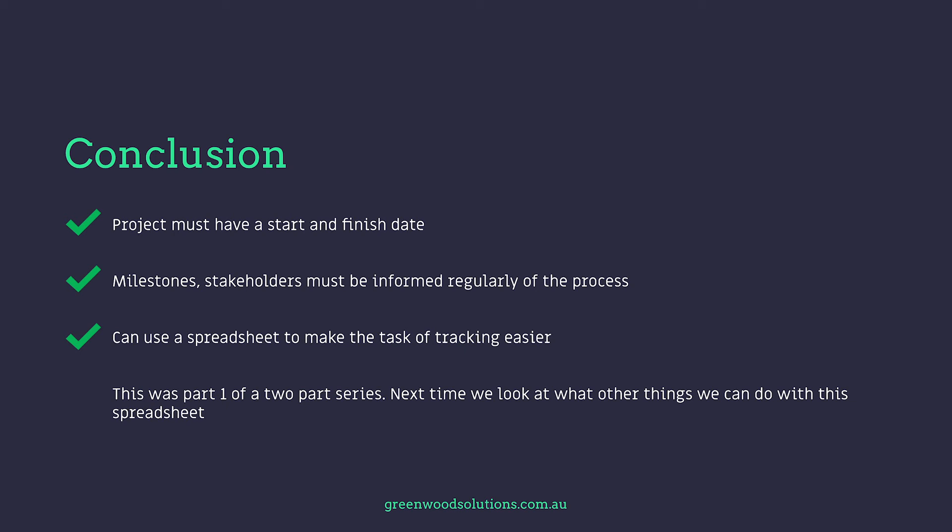Project must have a start and finish date. Stakeholders must be informed regularly of the process. You can use a spreadsheet to make the task of tracking easier. This was part one of a two-part series — next time we'll look at what other things we can do with this spreadsheet. Thanks so much for watching part one on commercial solar project management from a spreadsheet approach. I'm Veli from Greenwood Solutions. If you have any questions, inquiries, or any way we can improve these presentations, feel free to drop us a line. And if you like what you see, hit that subscription button. See you next time.